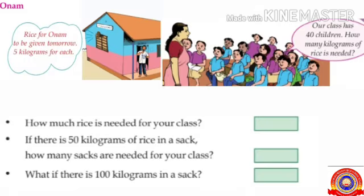Children, see the first activity: Onam. Rice for Onam is to be given tomorrow, 5 kilograms for each. Our class has 40 children. How many kilograms of rice is needed? Listen to the first question: how much rice is needed for your class? How many children are there in all? Yes, 40 children.